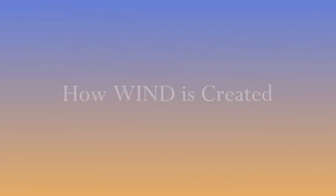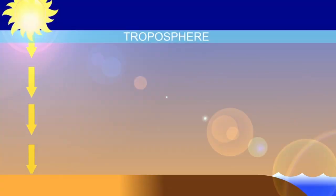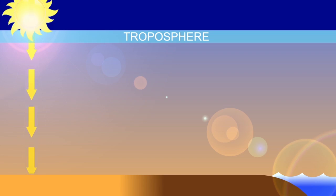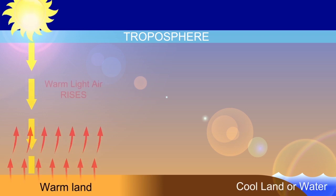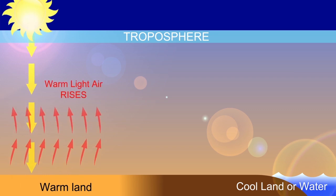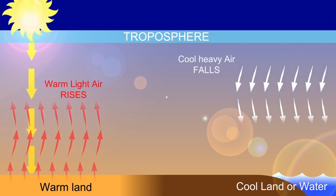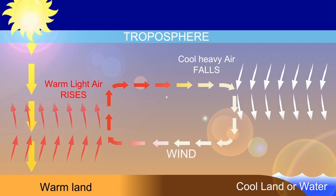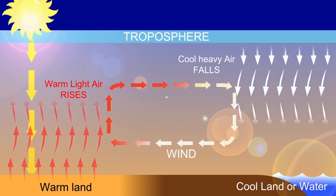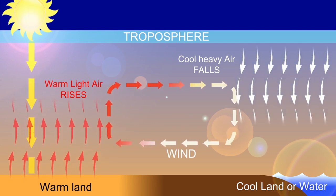How is wind created? Wind is simply air in motion. It is caused by the uneven heating of the earth's surface by the sun. Because the earth's surface is made of very different types of land and water, it absorbs the sun's heat at different rates. One example of this uneven heating can be found in the daily wind cycle.